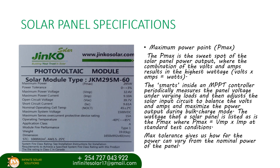A smart charge controller like an MPPT charge controller normally measures the solar panel voltage under varying loads and then adjusts the solar panel input circuit to balance the volts and amps and maximize the power output during bulk charge mode. The voltage that a solar panel is listed as Pmax is obtained by multiplying the voltage at maximum power and the current at maximum power at the standard test conditions.